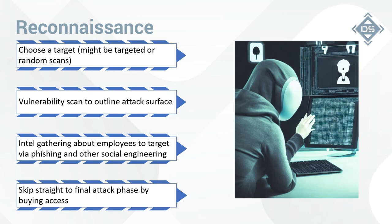This is also where they'll do intel gathering if they're going to do a spear phishing campaign against the target organization or use other social engineering attacks — putting together that information. Or they may skip directly to the actions-on-objectives phase by buying access from one of those access brokers.